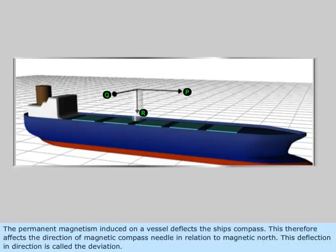The forces P, Q, and R. The permanent magnetism induced on a vessel deflects the ship's compass. This affects the direction of the magnetic compass needle in relation to magnetic north. This deflection in direction is called the deviation.